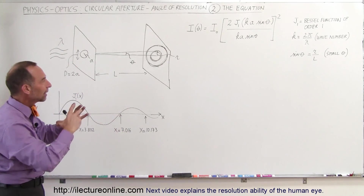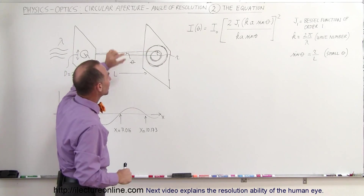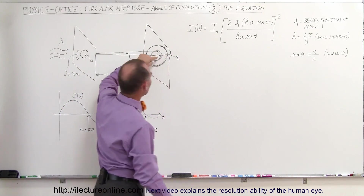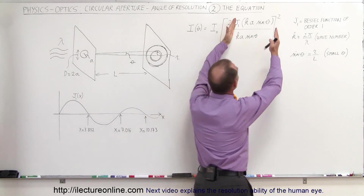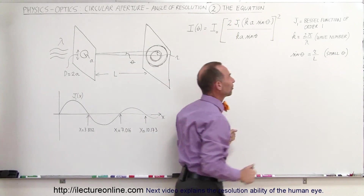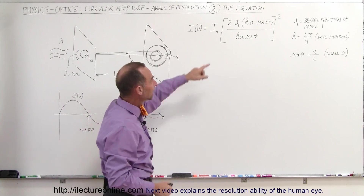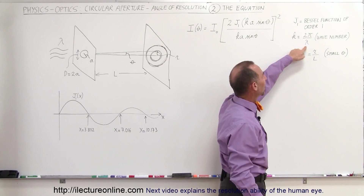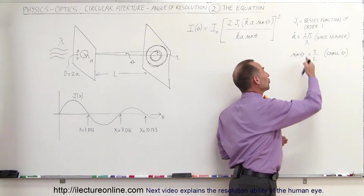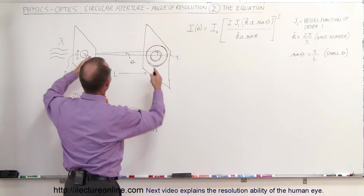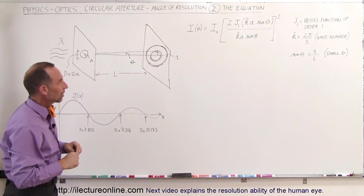The intensity as a function of the angle theta can be written as I-naught — the intensity at the very center — times 2 times the Bessel function of first order of the quantity Ka·sinθ, divided by Ka·sinθ. K is the wave number, which is 2π divided by lambda. For small angles, sinθ equals tanθ, which can be written as R over L, where R is the radius of the circular diffraction pattern on the screen and L is the distance to the screen.